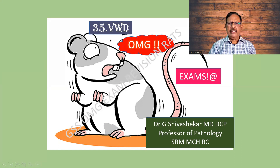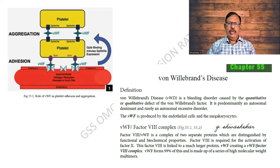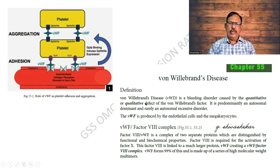Von Willebrand's disease is one of the factors important for the coagulation of blood. When there is a deficiency, it is called Von Willebrand's disease. It is a bleeding disorder caused by a quantitative or qualitative defect — both are present.